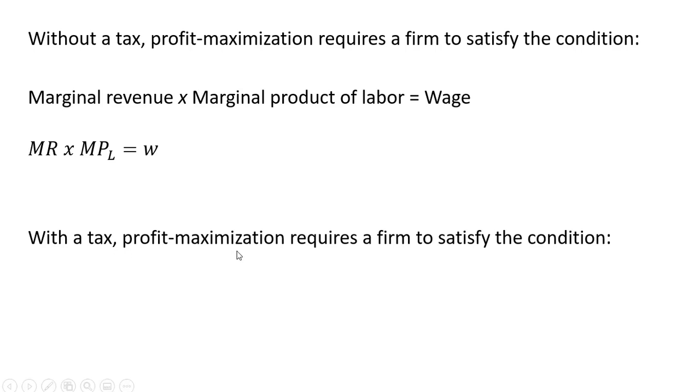With a tax, profit maximization requires a firm to satisfy a slightly modified condition. Here, marginal revenue times the marginal product of labor minus the tax times the marginal product of labor. We're looking at the net marginal revenue product on the left-hand side.